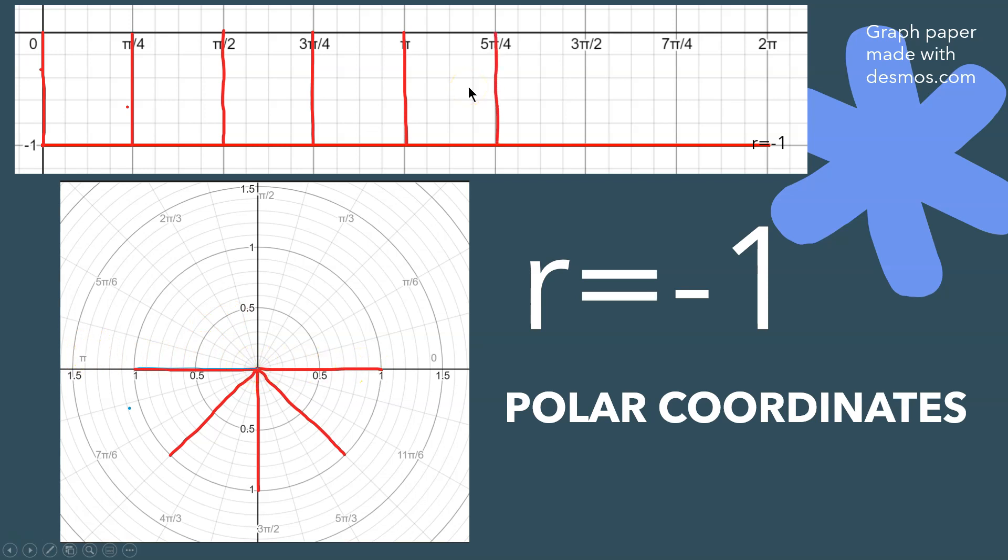At 5 pi over 4, you would go this way. And then at 3 pi over 2, because the angle is 3 pi over 2 but r is negative, you're going to go up instead of down. And at 7 pi over 4, because r is negative, you're going to go in that direction.